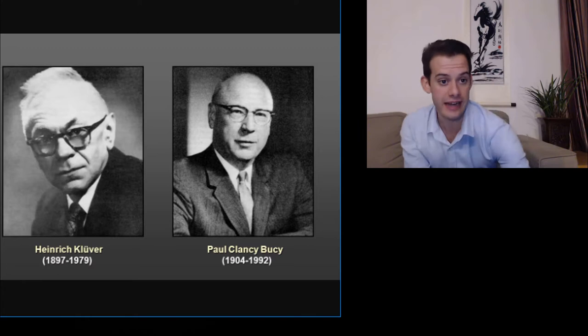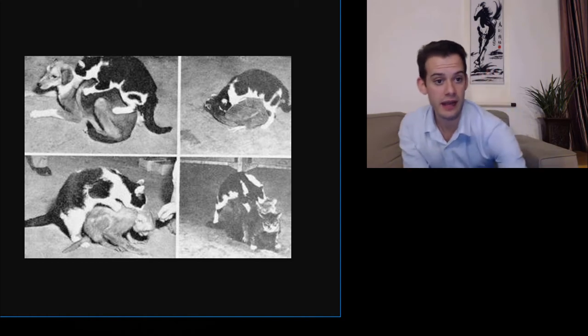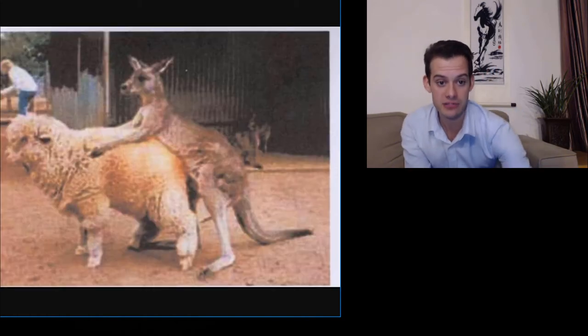Here we can see a cat demonstrating one of the symptoms of Kluver-Busey syndrome, attempting to mate with a number of other species. And here we can see a kangaroo demonstrating the same.